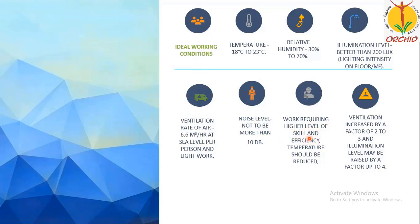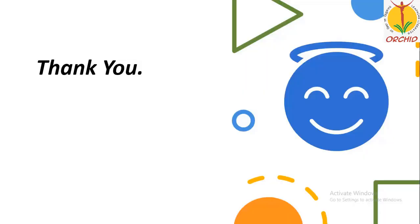For work requiring higher levels of skill and efficiency, temperature should be reduced or kept optimum. Ventilation factor should be increased by a factor of 2 to 3, and the illumination level may be raised by a factor up to 4. These are the ideal working conditions. Thank you.